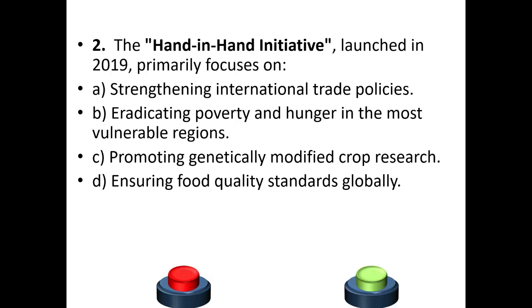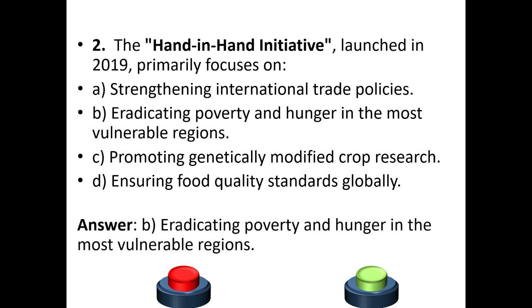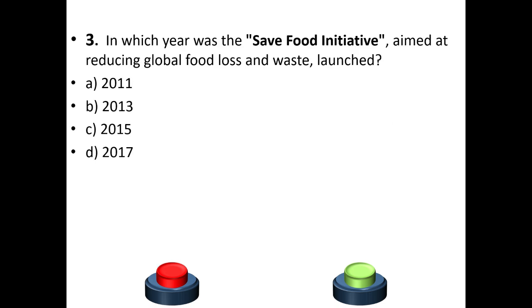Question 2: The Hand-in-Hand initiative, launched in 2019, primarily focuses on: a) strengthening international trade policies, b) eradicating poverty and hunger in the most vulnerable regions, c) promoting genetically modified crop research, or d) ensuring food quality standards globally. The answer is option B — eradicating poverty and hunger in the most vulnerable regions.